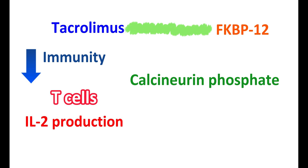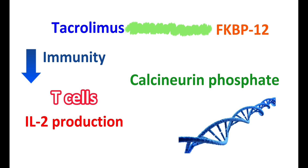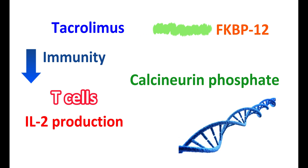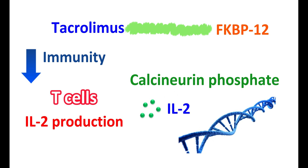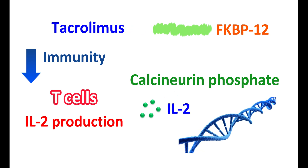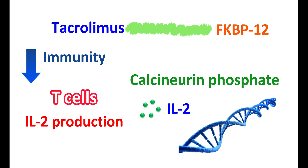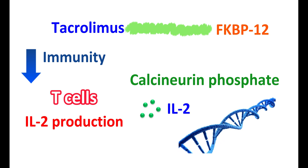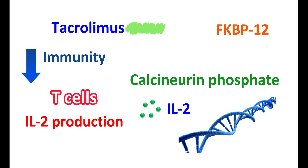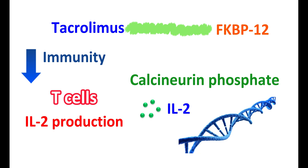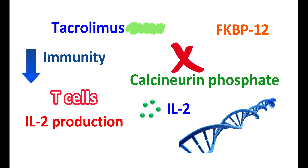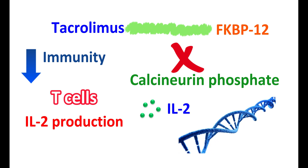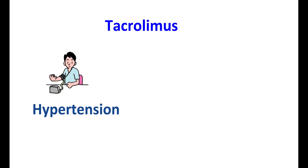This complex inhibits calcineurin phosphatase. Normally, calcineurin is required for T-lymphocyte signal transduction and IL-2 production. When calcineurin phosphatase is activated, it stimulates gene transcription where the IL-2 gene is activated, resulting in more release of IL-2. This IL-2 acts as a key mediator for amplification of immune signaling, binding to IL-2 receptors on T-lymphocytes and proliferating the immune response. Tacrolimus inhibits this by binding to FKBP, thereby inhibiting IL-2 production and T-cell activation.